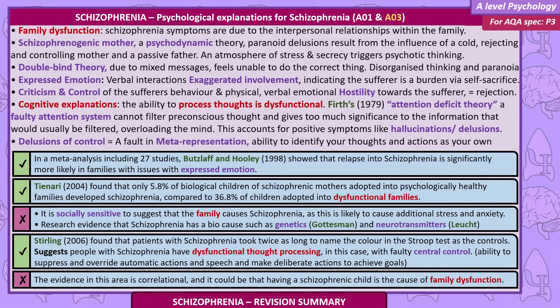Sterling, 2006, found patients with schizophrenia took twice as long to name the colour in the Stroop test as controls, suggesting dysfunctional thought processing — in this case, faulty central control, the ability to suppress automatic actions and speech and make deliberate actions to achieve goals. However, the evidence in this area is correlational, and it could be that having a schizophrenic child is the cause of family dysfunction.